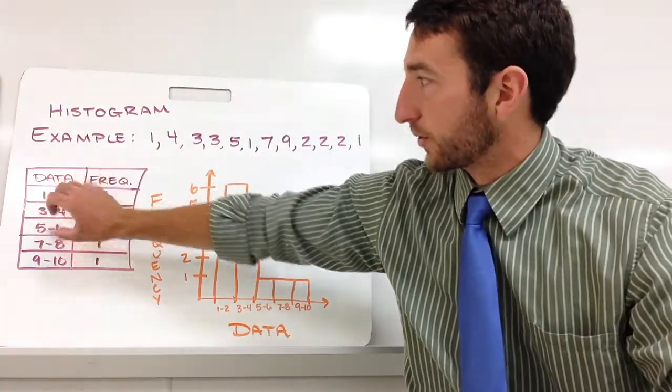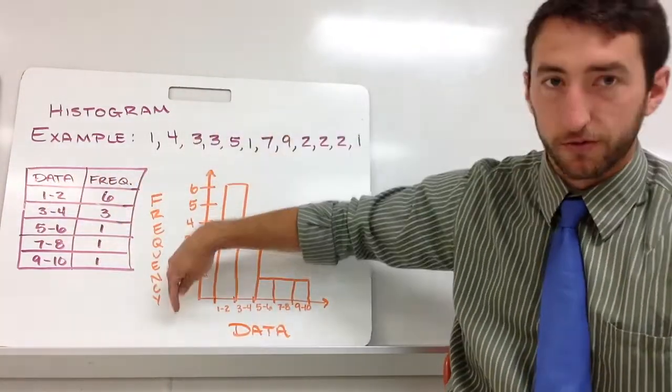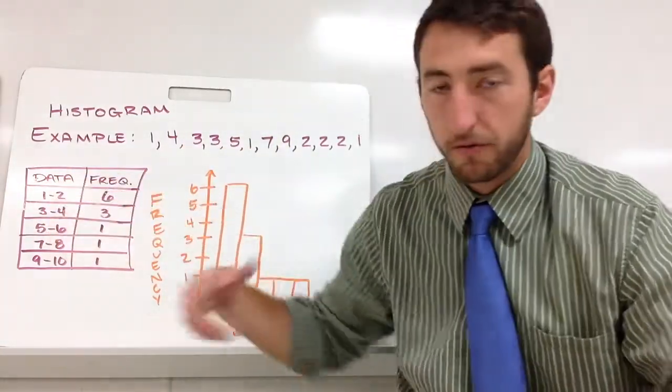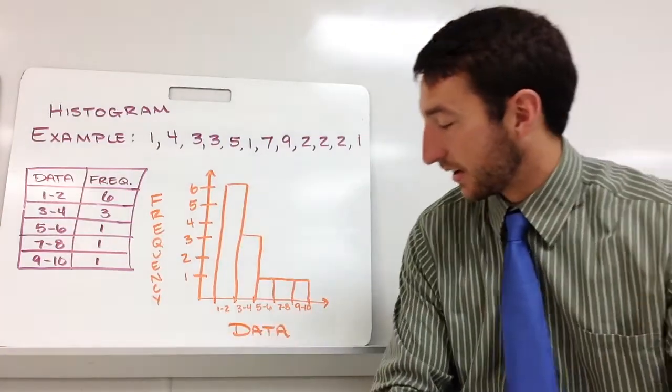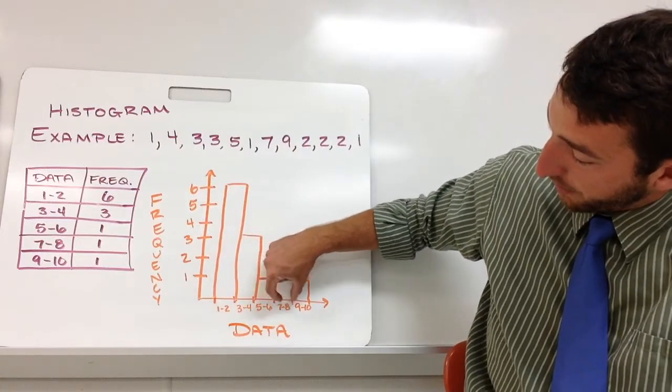So we still have our same frequency table. And now what we're going to do is use that. Our frequency will always go on the vertical axis. And then whatever our variable is, we need to label our x-axis as that variable.